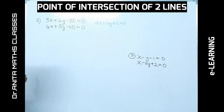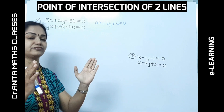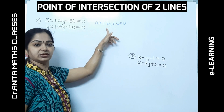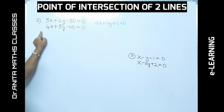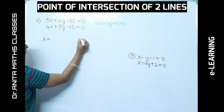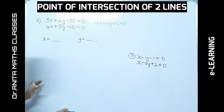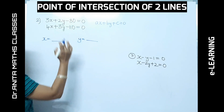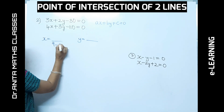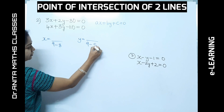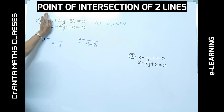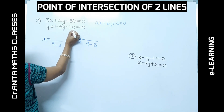Now let's look at the second problem. The condition is that equations must be in general form — if the constant is outside, bring it inside. To find the denominator, hide the constant and cross multiply the coefficients: 3 × 3 = 9 minus 8 × (1/2) = 8, giving denominator 1. The same denominator applies to both coordinates.